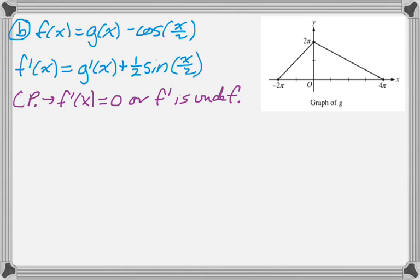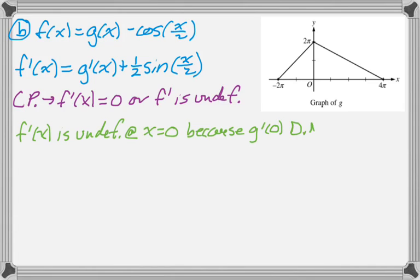So let's deal with undefined right away, because if you look at the graph of g of x, you can tell immediately that at 0 it is not differentiable. So f prime will be undefined at x equals 0, because g prime of 0 does not exist. Now we need to deal with f prime of x being equal to 0, and to do that we need to figure out g prime.